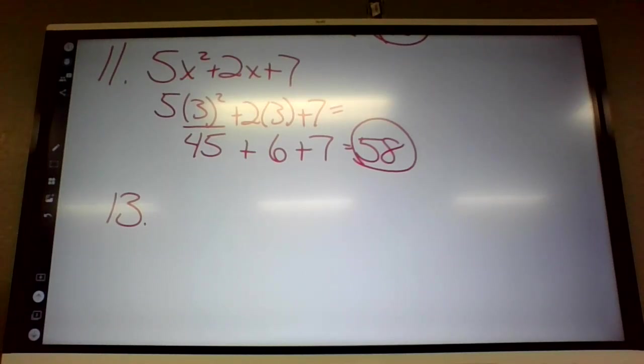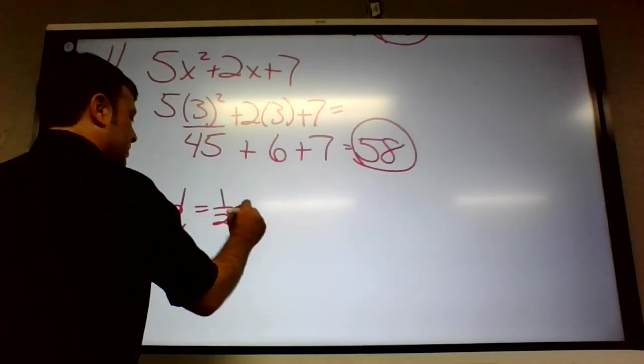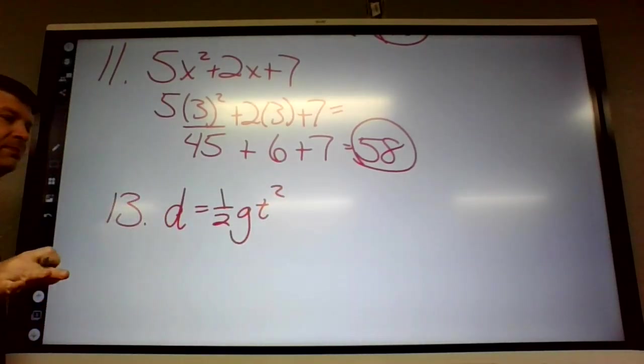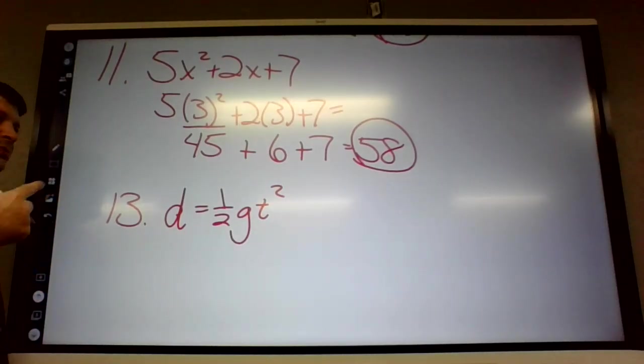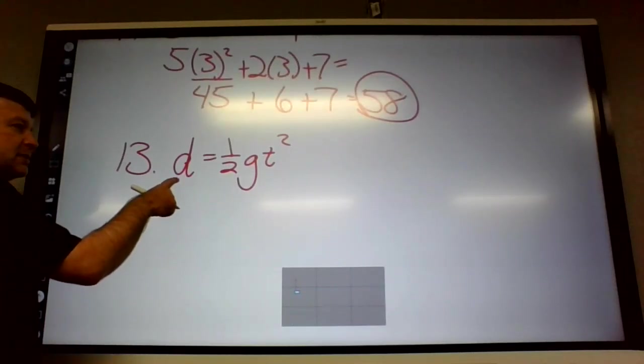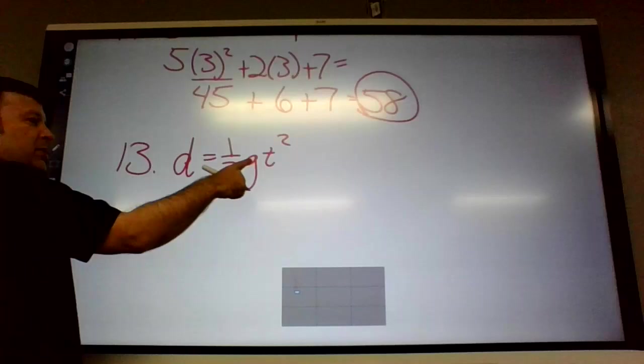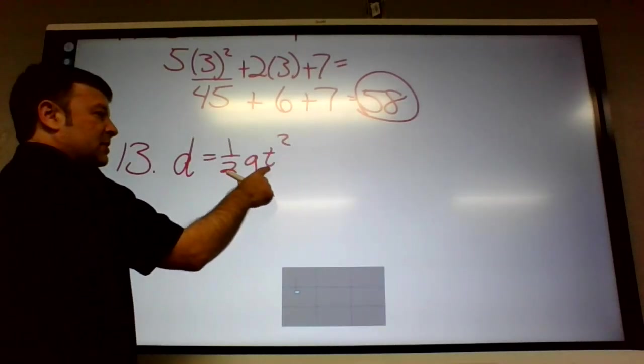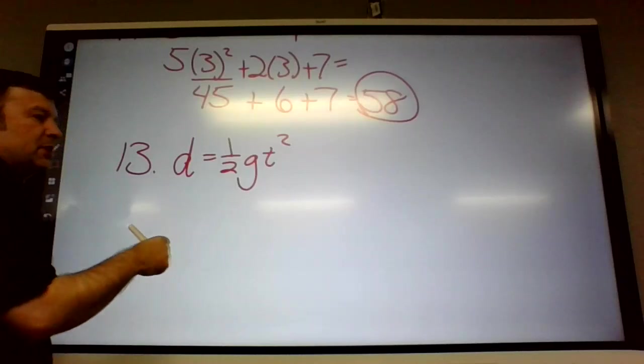This one always confuses people. Please pay attention on number 13 so I don't have to teach you number 12. The formula for the distance that a dropped object falls when air resistance is negligible. Do you guys know what negligible means? Basically nothing. It means basically nothing. Virtually nothing. Is d equals one-half gt squared. So they're saying when you drop an object, this tells you how far the object's going to fall.